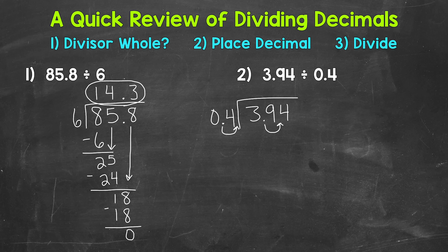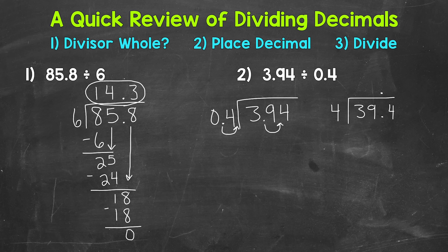Let's move the decimal once on the inside as well — multiplying the dividend by 10 also. We rewrite the problem with the whole divisor and the decimal placed: so we have 4 for our divisor and 39 and 4 tenths for our dividend. Now our divisor is whole, so we can bring our decimal straight up. Now we start with divide: 3 divided by 4 — how many whole groups of 4 are in 3? We can't do that, so we move over and use 39. So 39 divided by 4 — how many whole groups of 4 are in 39? Well, 9. That gets us to 36.